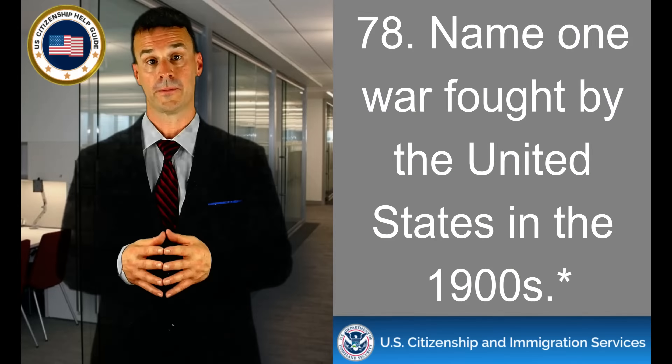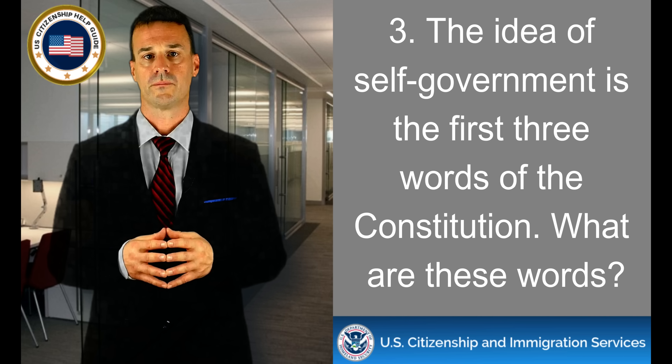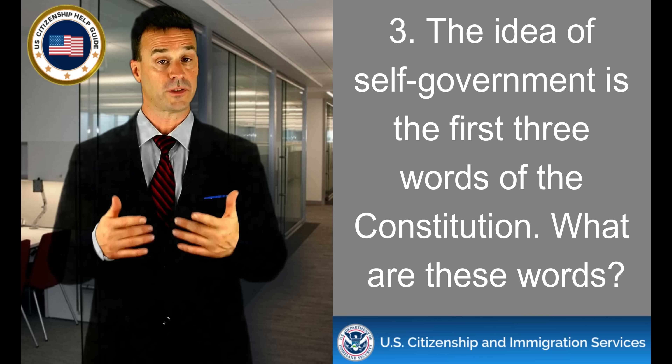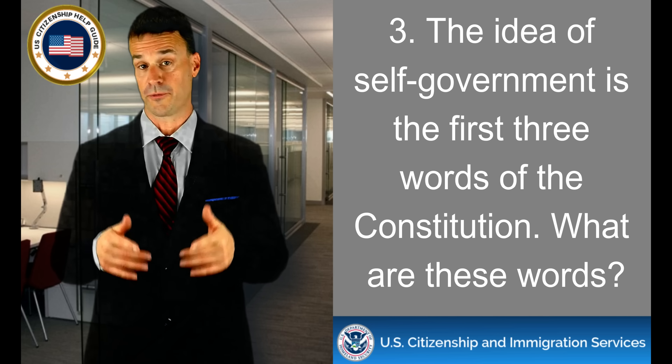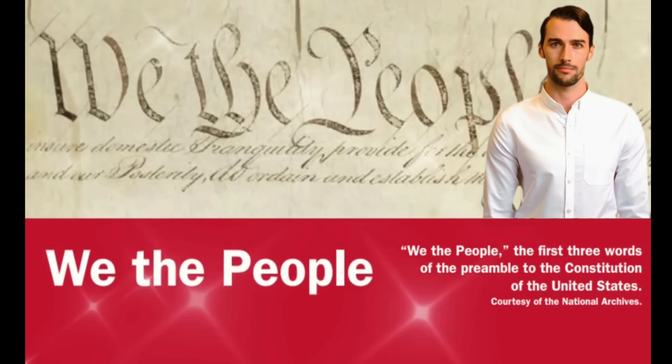What stops one branch of government from becoming too powerful? Separation of powers. The idea of self-government is the first three words of the Constitution. What are these words? We the people.